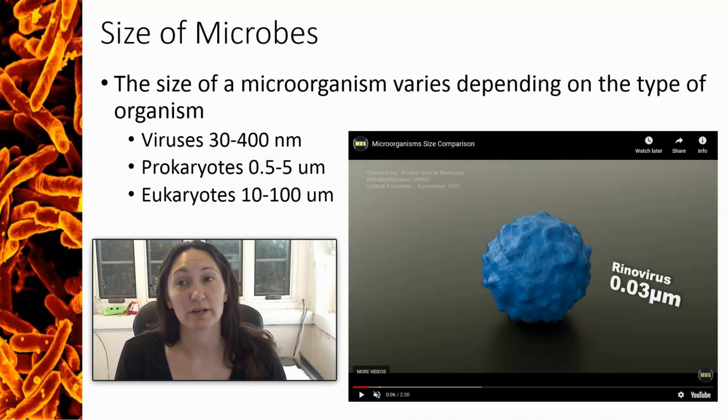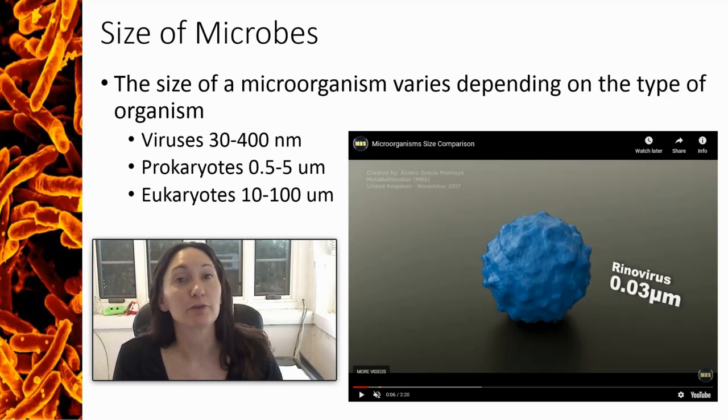Different types of microorganisms have different sizes depending on the type of microbe that it is. Viruses are the smallest of all microbes, typically ranging from 30 to 400 nanometers. Prokaryotes will range up to about 5 micrometers, and eukaryotes make up the largest of the microbes ranging from 10 to 100 micrometers.